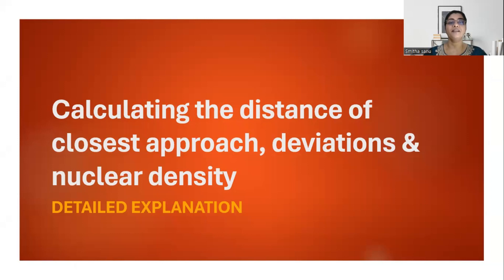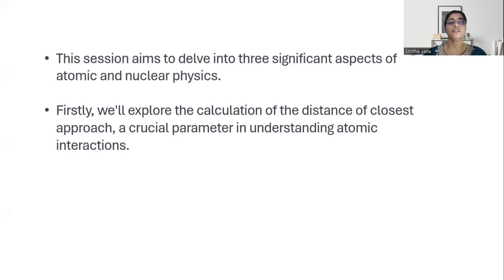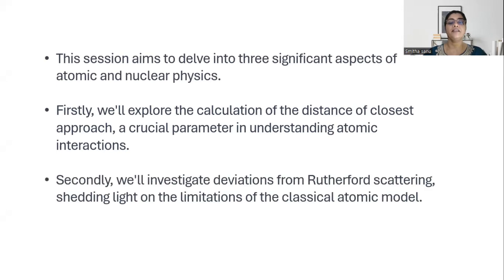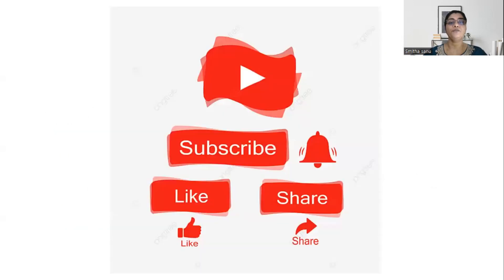Hello everyone, welcome to Physics Pathfinder. Today we are continuing with E1, which includes three important aspects in atomic and nuclear physics: the distance of closest approach, deviations from Rutherford's alpha scattering experiment and limitations of the classical atomic model, and finally the concept of nuclear density. Before we start, please like and subscribe to my channel and press the bell icon for daily updates.